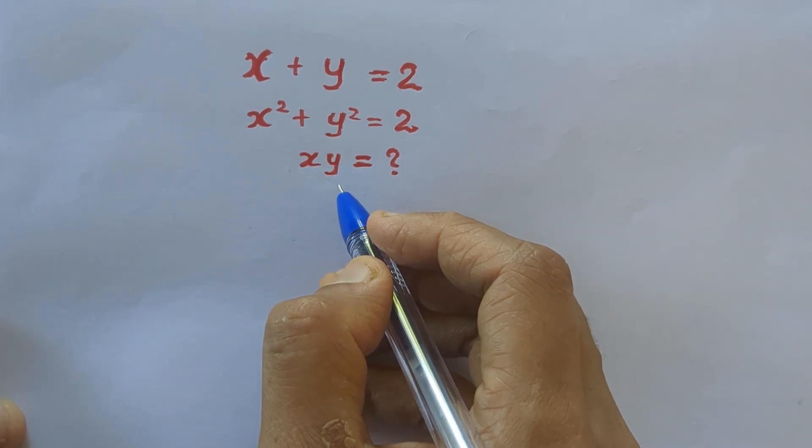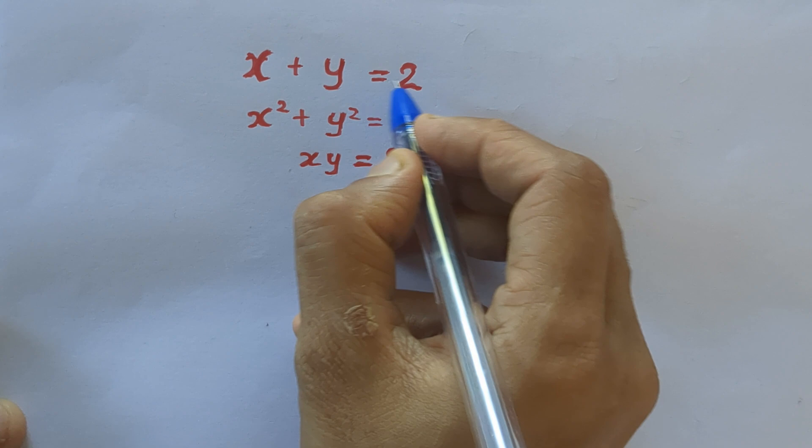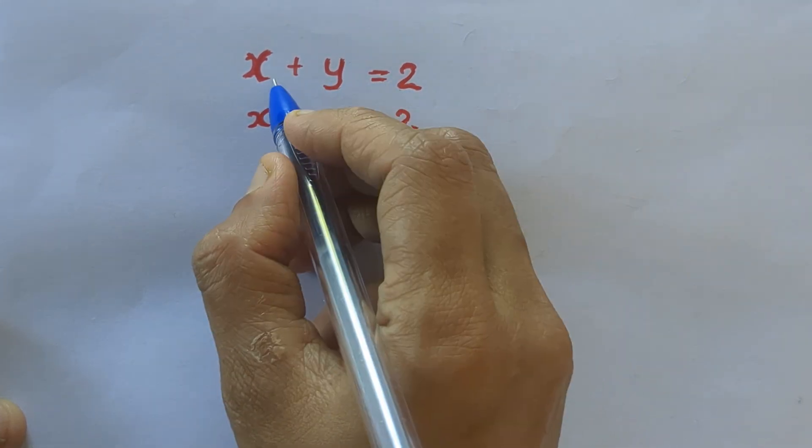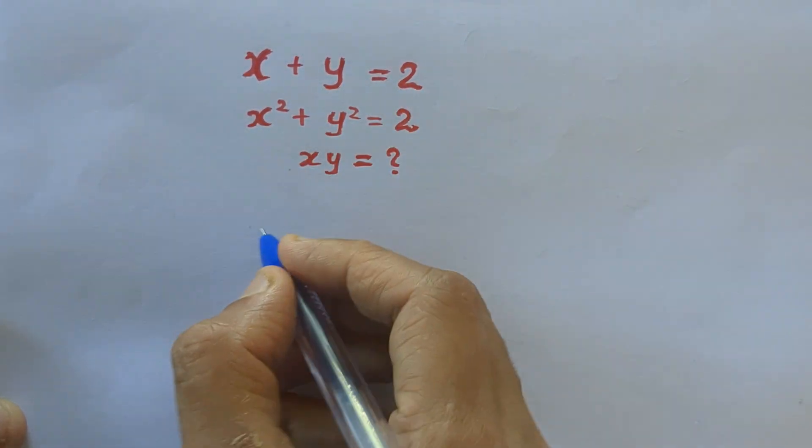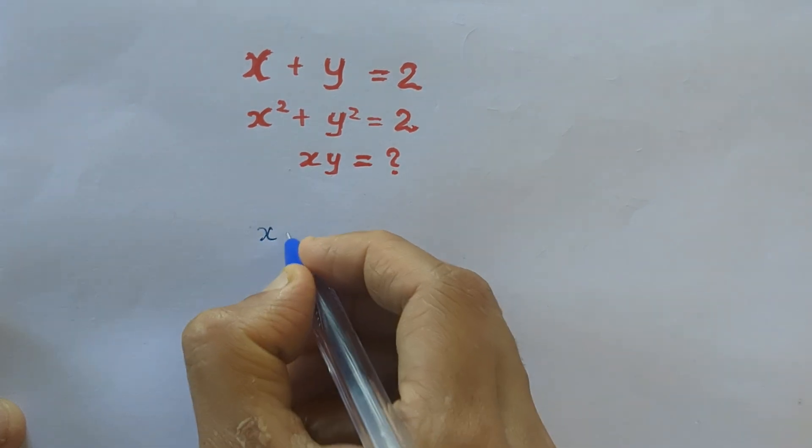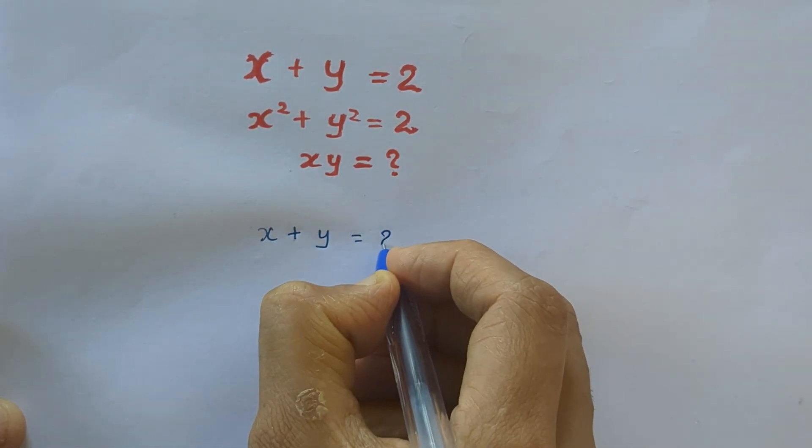How are we going to solve this? Let's begin with the equation, this equation that is x plus y equal to 2.